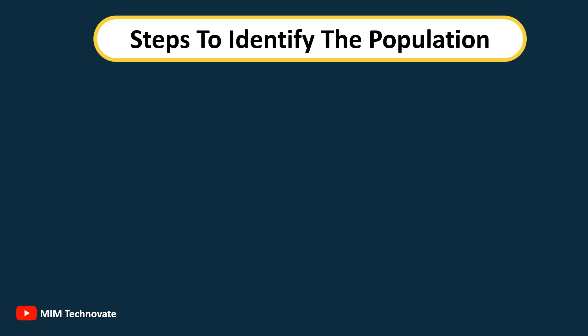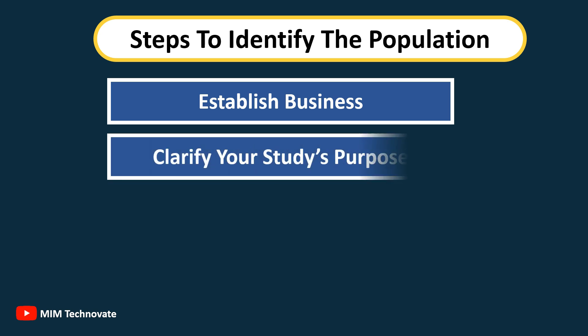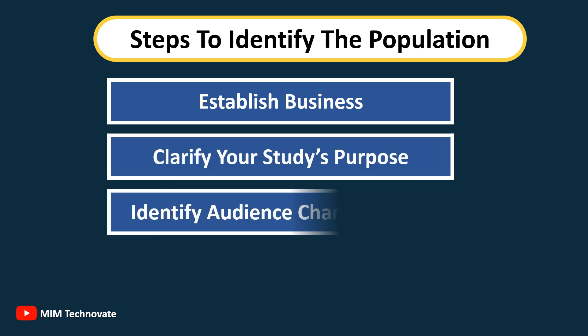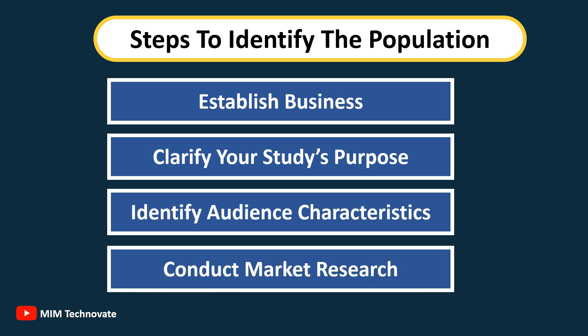Steps to identify the population: establish business or brand objectives, clarify your study's purpose, identify audience characteristics, and conduct market research. Let's look at each step in detail.